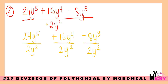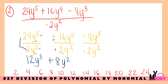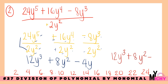Proceeding with division: 24 divided by 2 is 12, and y⁵ divided by y² gives y³ (5 minus 2 equals 3). For the second term, 16 divided by 2 is 8, positive divided by positive is positive, and 4 minus 2 equals 2, giving 8y². For the third term, negative 8 divided by 2 gives negative 4 (different signs), and 3 minus 2 equals 1 — so negative 4y. The final answer is 12y³ plus 8y² minus 4y.